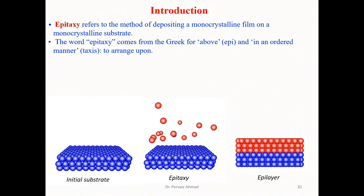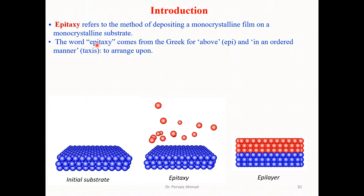The word epitaxy basically comes from the Greek language. It has two parts: 'epi,' which means 'above,' and 'taxis,' which means 'in an ordered manner' or 'to arrange upon.' So the first word, epi, from Greek, stands for 'above,' and taxis means 'in an ordered manner.'